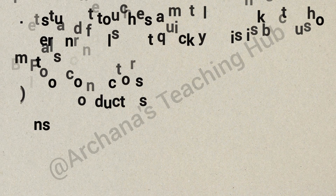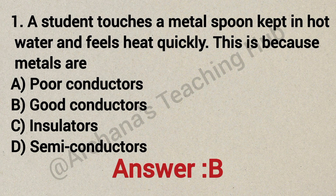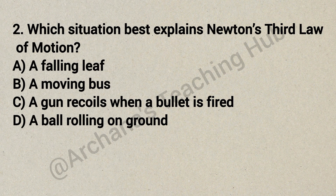Question 1: A student touches a metal spoon kept in hot water and feels heat quickly. This is because metals are — Option A: poor conductor, Option B: good conductor, Option C: insulator, Option D: semiconductors. Correct answer is Option B: good conductors.